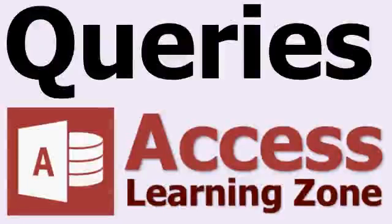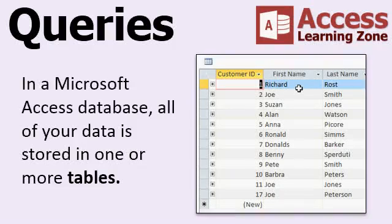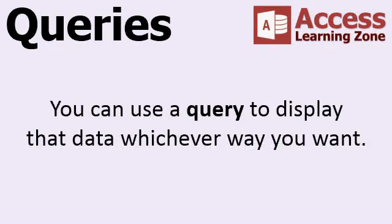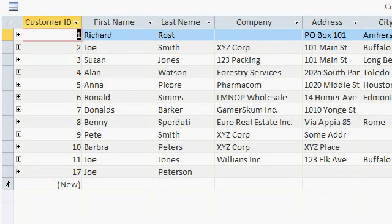What are queries in Microsoft Access? In a Microsoft Access database, all of your data is stored in one or more tables. You can use a query to display that data whichever way you want. For example, here you can see my customer table which has 12 records in it. These records are in no particular order.